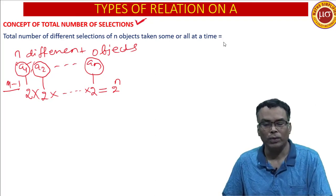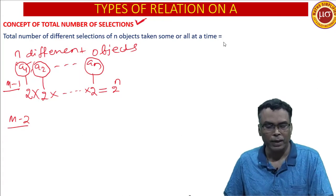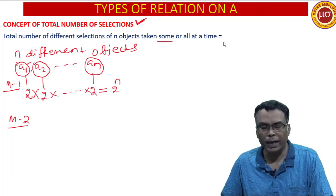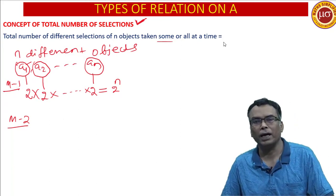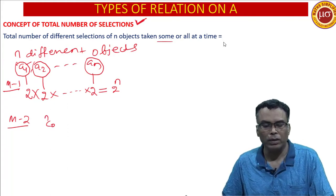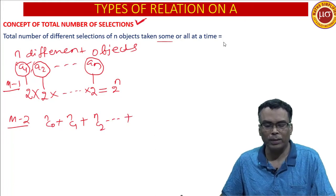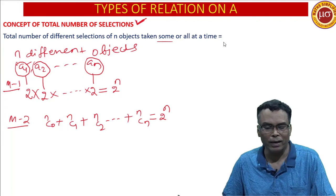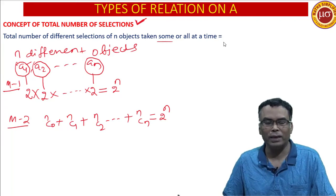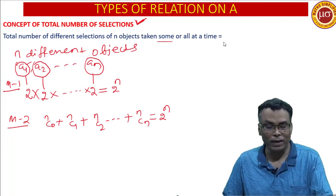Therefore, the number of subsets in a set is 2 to the power n, and the number of elements in the power set is also 2 to the power n. Method 2: We may take no element (NC0), one element (NC1), two elements (NC2), up to n elements (NCn). The total NC0 + NC1 + ... + NCn equals 2 to the power n, from the binomial theorem. So total number of selections is always 2 to the power n.